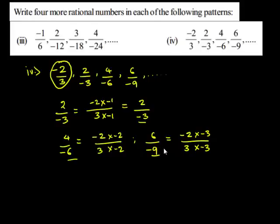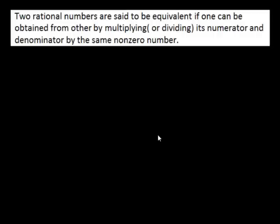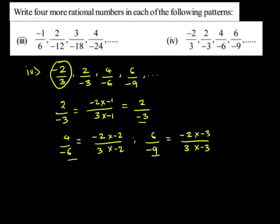Two rational numbers are said to be equivalent if one rational number can be obtained from the other by multiplying its numerator as well as its denominator by the same non-zero number. So, as you can see here, 2 upon negative 3 is obtained when negative 2 upon 3 is multiplied by negative 1 in the numerator and in the denominator.